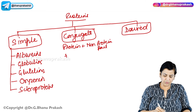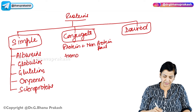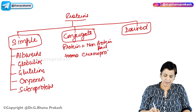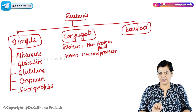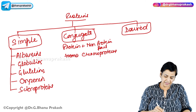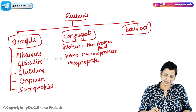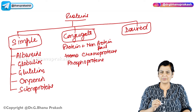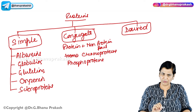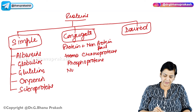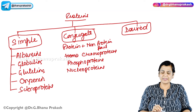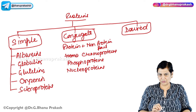Conjugate proteins include chromoproteins, where hemoglobin is a colored example. Then there are phosphoproteins — for example, casein in milk, which is one of the most important proteins present in milk. Nucleoproteins include histones and non-histones. Glycoproteins have carbohydrate attached to the protein part.